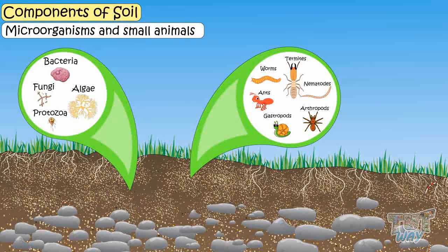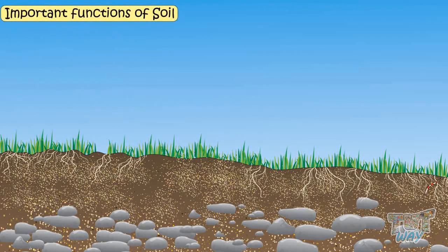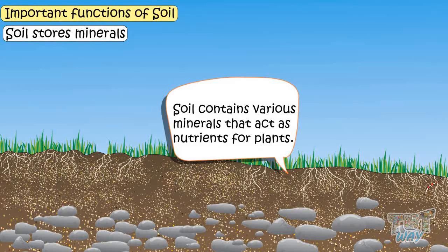So kids, we learned the components of soil. Now let's learn some important functions of soil. The first function is that it stores minerals — soil contains various minerals that act as nutrients for the plants.